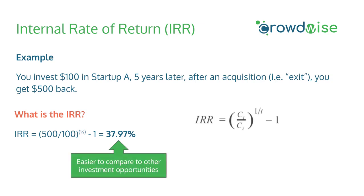Notice the 38% is much easier to compare to other investment opportunities — for example, public stocks or bonds. It's much harder to think of things in terms of exit multiples and time, and much easier to compare them when they're broken down to an annualized rate like this.